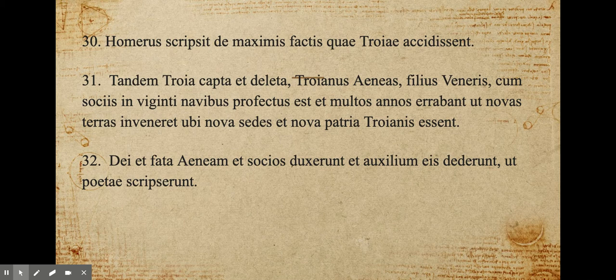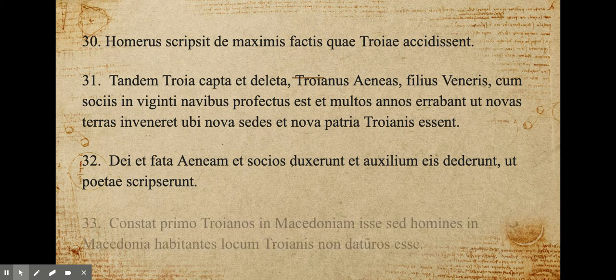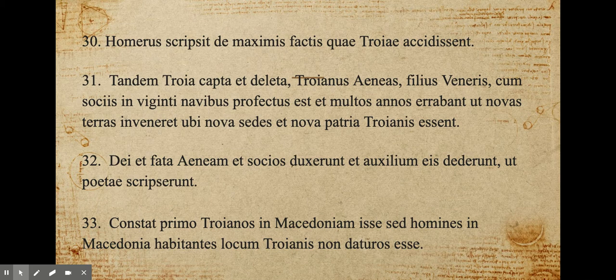Dei et fata Aenean et socios duxerunt et auxilium eis dederunt ut poetae scripserunt. The gods and the fates led Aeneas and his allies and gave them help, as the poets write. It was agreed that the Trojans first went to Macedonia, but the people living in Macedonia — a nice habitante, a PAP — non daturos esse, a future infinitive in indirect statement, would not give a place to the Trojans.